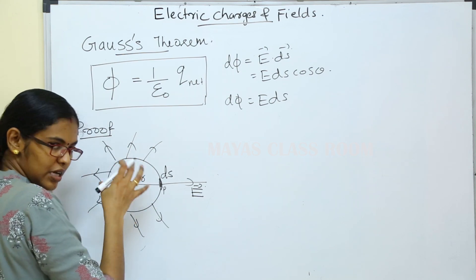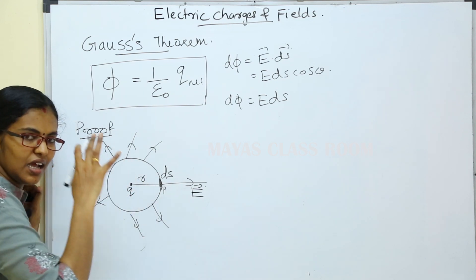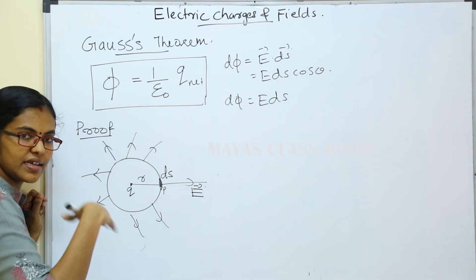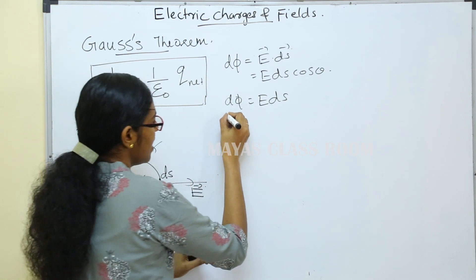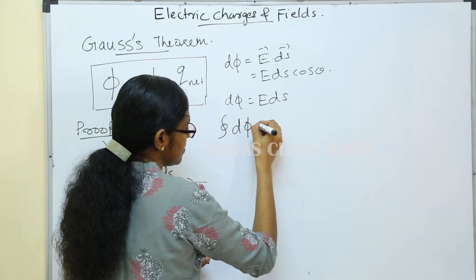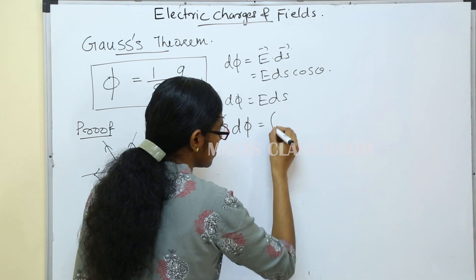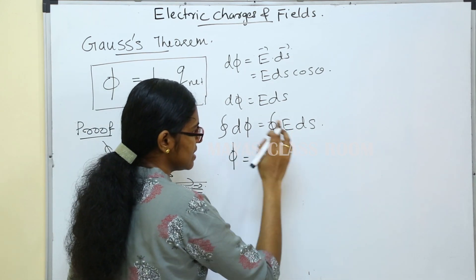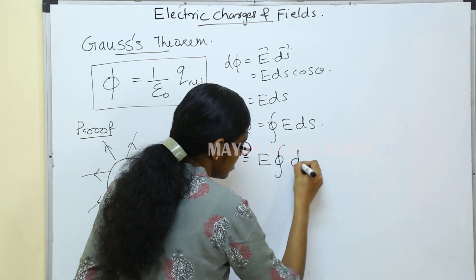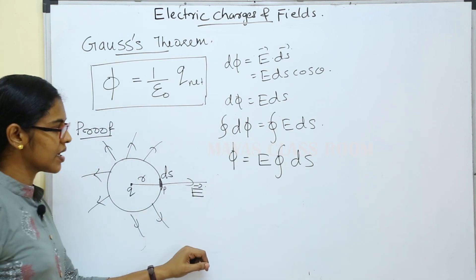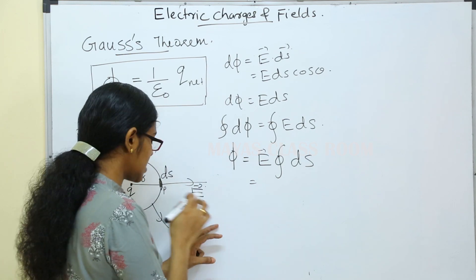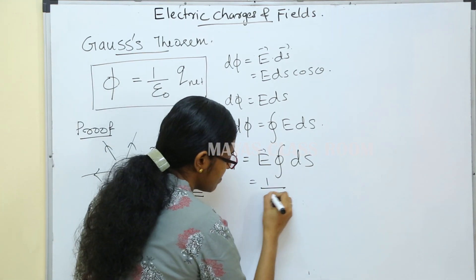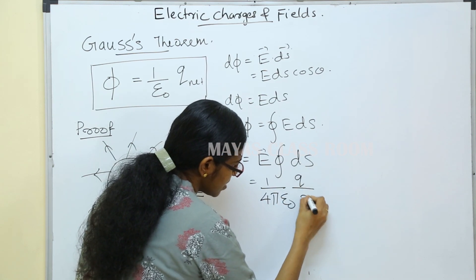We consider a small portion of the surface. The total surface integral gives the closed surface integral of dφ equal to the closed surface integral of E dot dS. Since E is constant over the surface, φ = E times the integral of dS. The electric field E equals (1/4πε₀) times q divided by r².